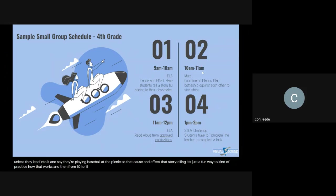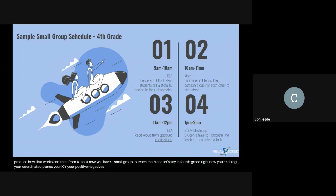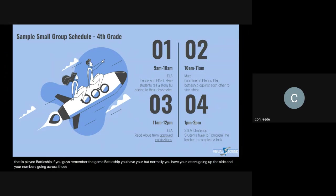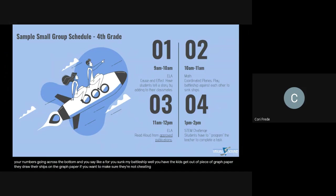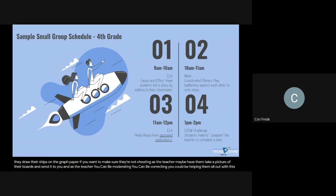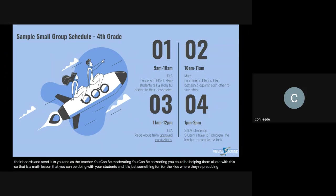From 10 to 11, you have a small group to teach math. If in fourth grade you're doing coordinate planes — your X, Y, positive and negatives — there is a fun activity: play Battleship. You have the kids get out a piece of graph paper, draw their ships on it, and if you want to make sure they're not cheating, have them take a picture of their boards and send it to you. As the teacher, you can be moderating, correcting, and helping. It's a math lesson that's fun for kids while practicing the skills you were just teaching.